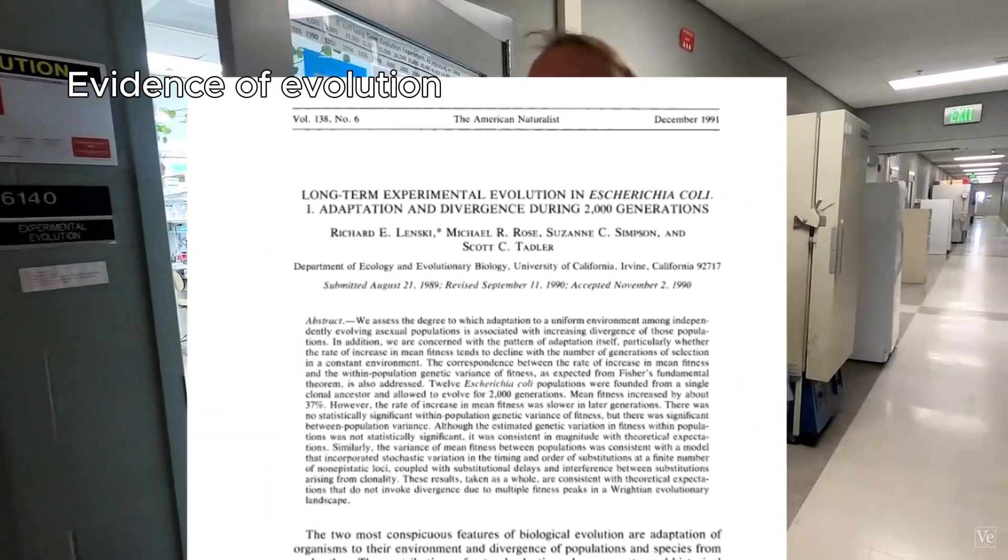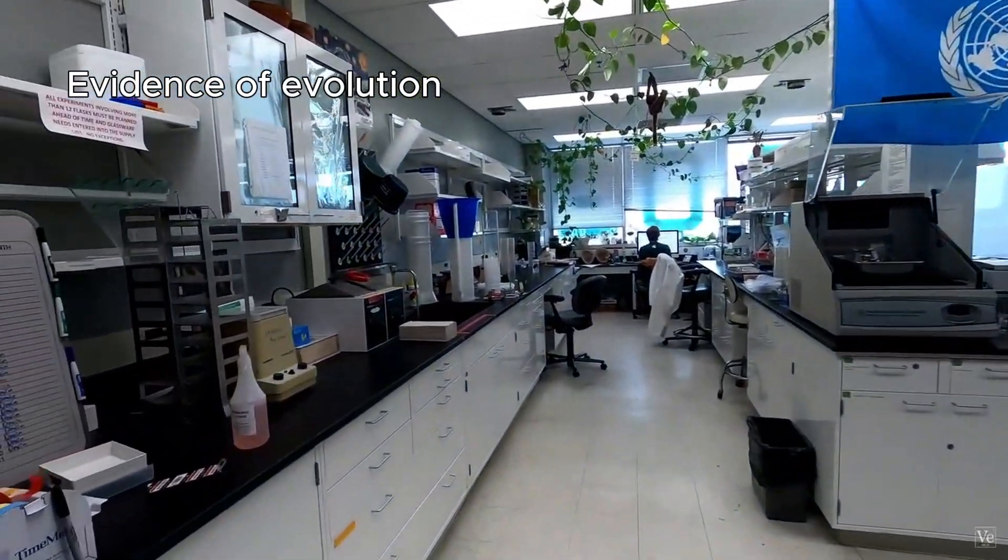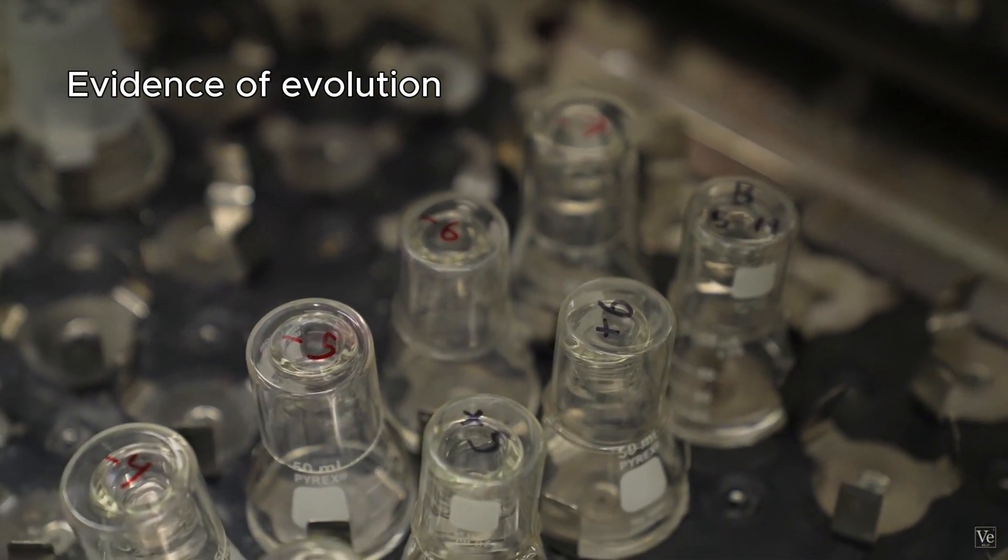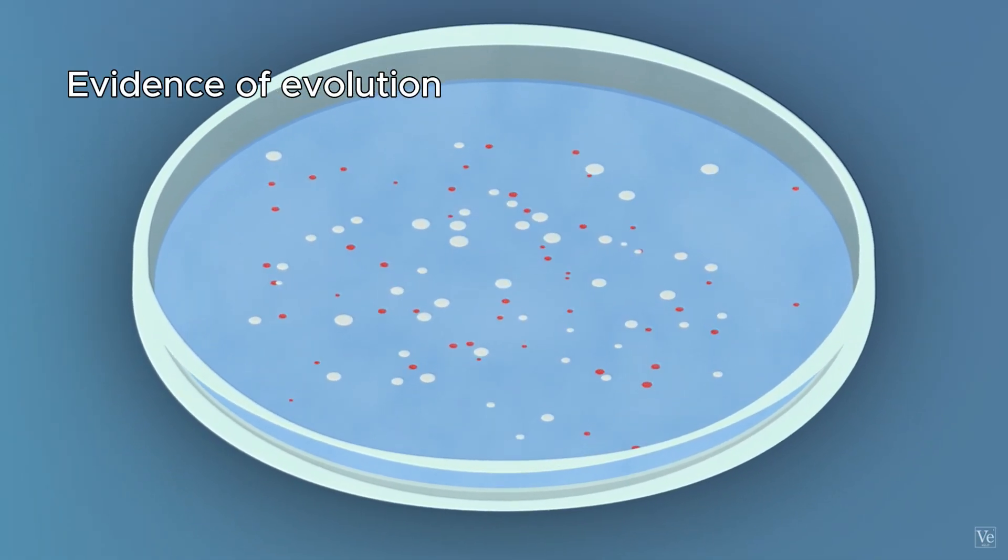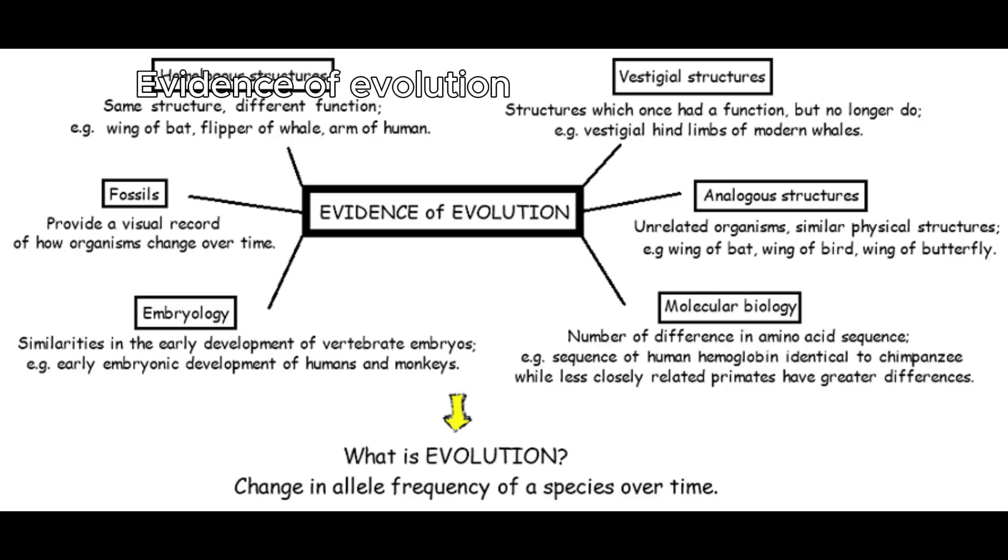For example, Richard Lenski's experiment in the 1990s, where he took a species of bacteria, split their population, and observed their speciation over thousands of generations. And these are just the surface level evidences for evolution. There's so much more out there.